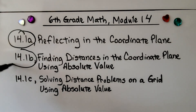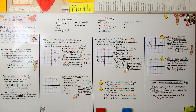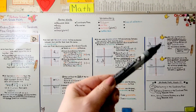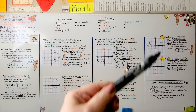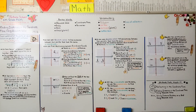We're finished with the second part of the lesson and moving on to solving distance problems on a grid using absolute value. Just remember: if you're confused about whether to add or subtract, follow the rule — if the two points are on opposite sides of an axis, we add; if they're in the same quadrant, we subtract. Have a really good day, and I hope you join me for the last part of this lesson. Bye.